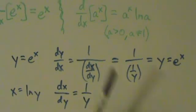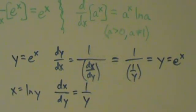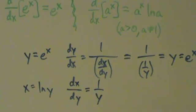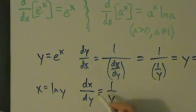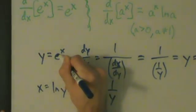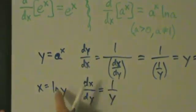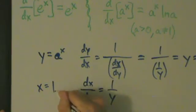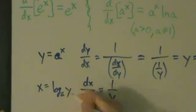And actually, for a to the x, it's pretty much going to be the same thing, but the only difference here is, let's just change some of this. So instead of e, we'll have a, and then instead of ln y, x is going to be the base a log of y.